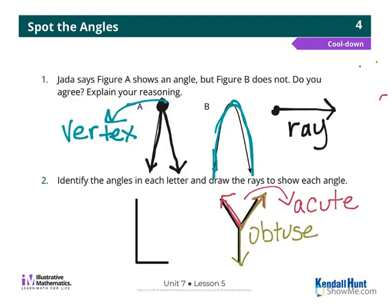And then I'm going to grab another color, because over here I see another one. What kind of angle is this one? It's another obtuse. Alright, and literally, that was your cool-down for Lesson 5.